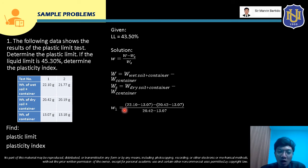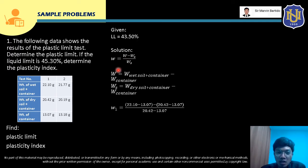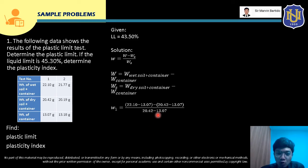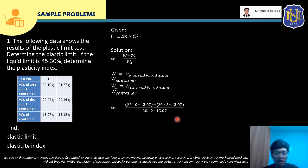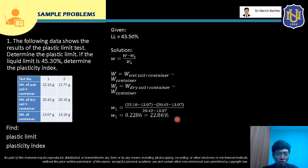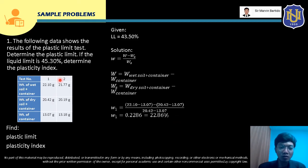Para dun sa water content para dito sa test one, apply lang natin yung formula. Yung weight nung wet soil natin, that is 22.10 minus 13.07, and then yung weight nung dry soil natin, that is 20.42 minus 13.07 over 20.42 minus 13.07. So if we solve this: 22.10 minus 13.07 minus quantity (20.42 minus 13.07) over 20.42 minus 13.07 — ito ay 0.2286, or 22.86% if we multiply this by 100. So that will be the water content for test number one.